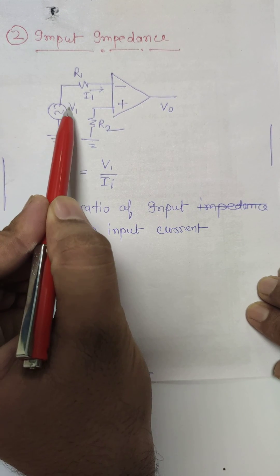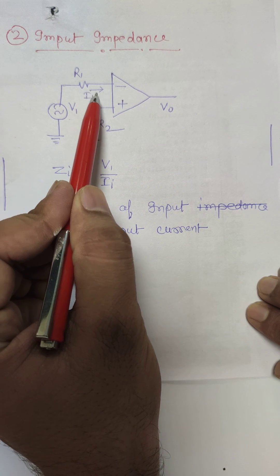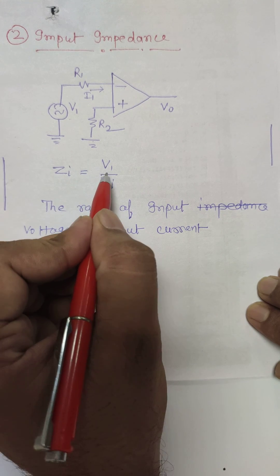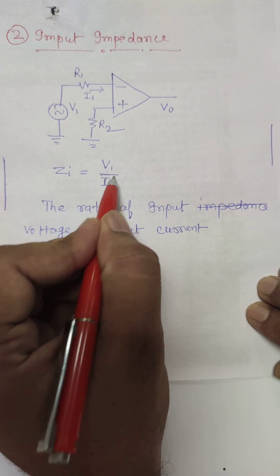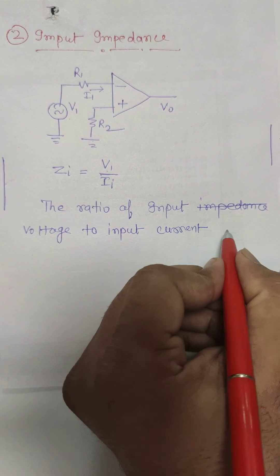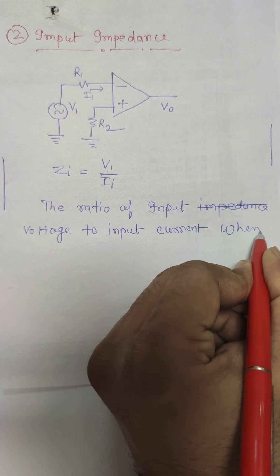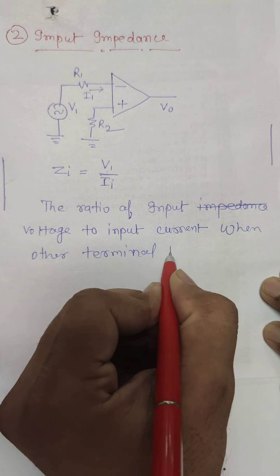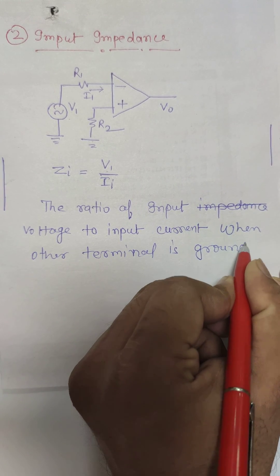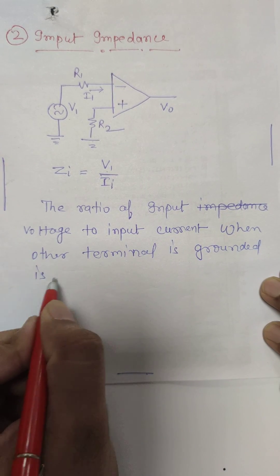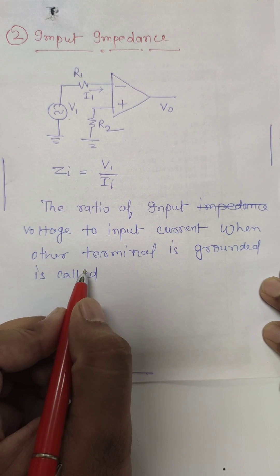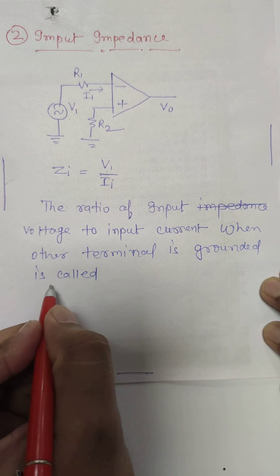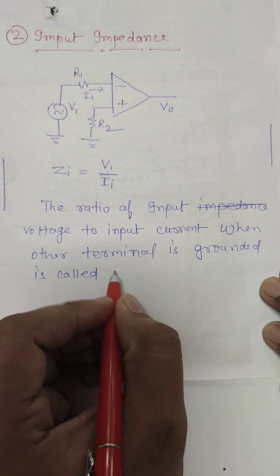When voltage source V1 is applied here and current I1 is flowing through the op-amp, the input impedance will be the ratio of input voltage V1 to input current I1. The ratio of input voltage to input current when the other terminal is grounded is called input impedance.